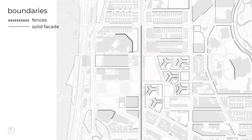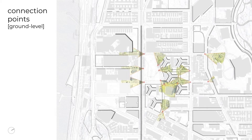To investigate different boundaries, we studied the physical boundaries set by fences and bare solid facades of tall or object-like buildings in the neighborhood. Then we looked into potential connection points that the pedestrian could experience at the ground level.